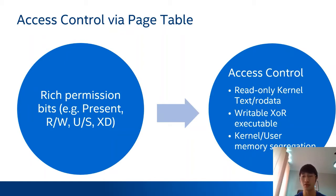Many security features to enforce access control are built on these permission bits. For example, in H-Lite-based kernel, kernel code and read-only data are mapped as read-only in the PageTable — it can reduce the kernel's attack surface. The kernel also maps its data stack as non-executable. Kernel also uses SMAP or SMEP to segregate user and kernel memory access.